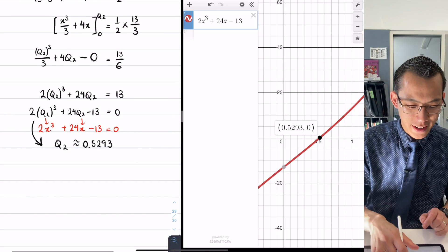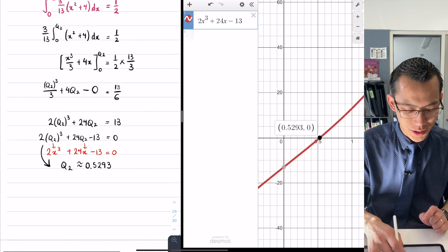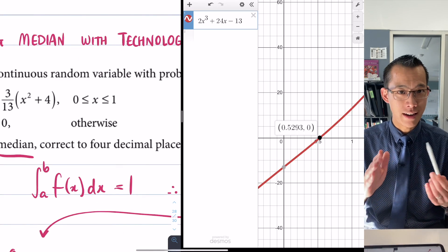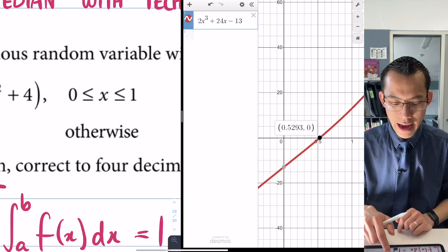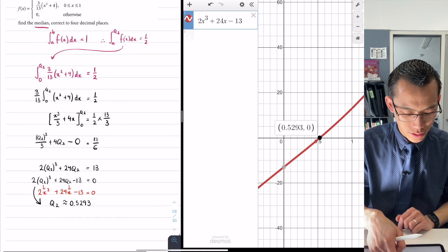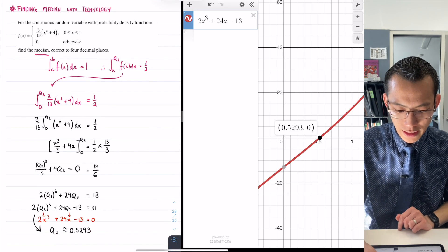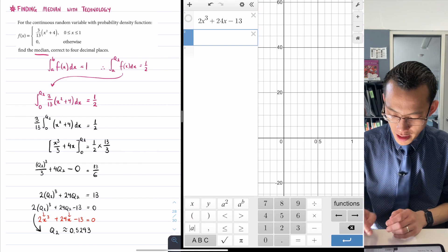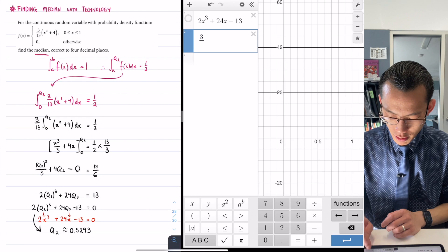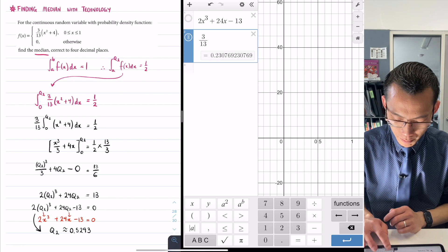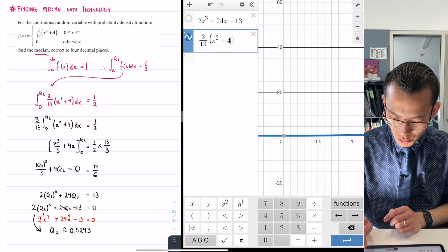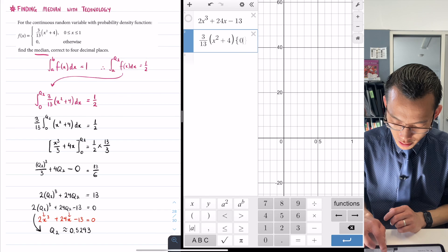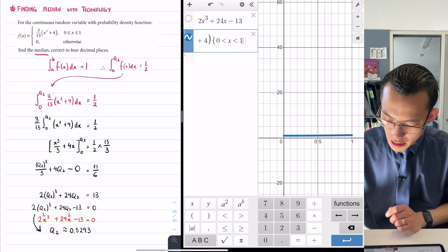If I think about it, this does make sense because 0.5293 is around the center of where my probability density function is defined between 0 and 1. In fact it's so close to the middle I'm kind of suspicious, so what I'm going to do quickly is hide my cubic equation and graph my probability density function: 3/13(x² + 4), and I'm only interested in the domain from 0 to 1.